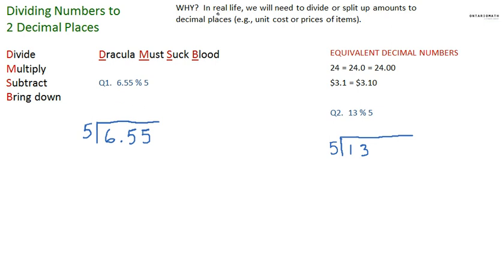Why? Well in real life we need to divide or split up amounts to decimal places. For example, unit costs or prices of items. Unfortunately not every number that we deal with in life is a whole number, so we have to be able to deal with decimal spots. And it's really, really easy.